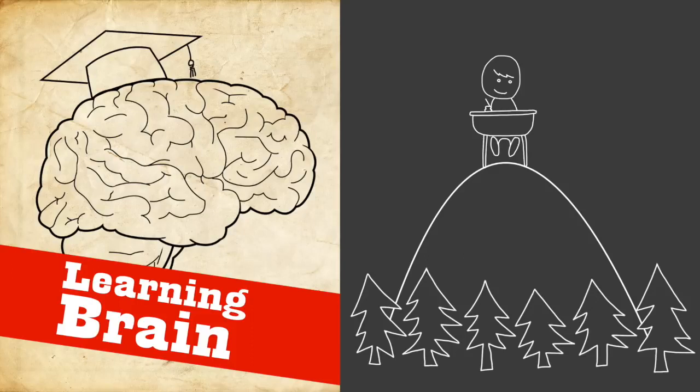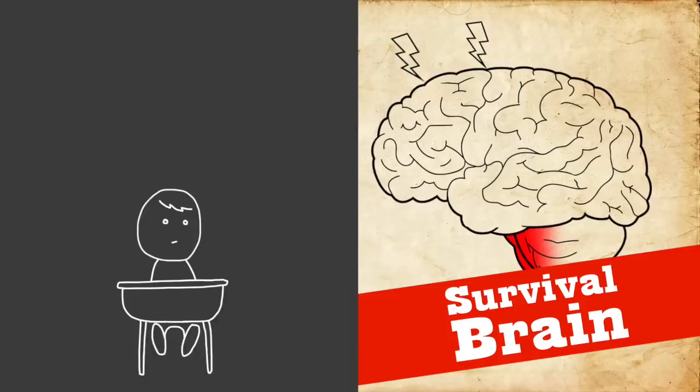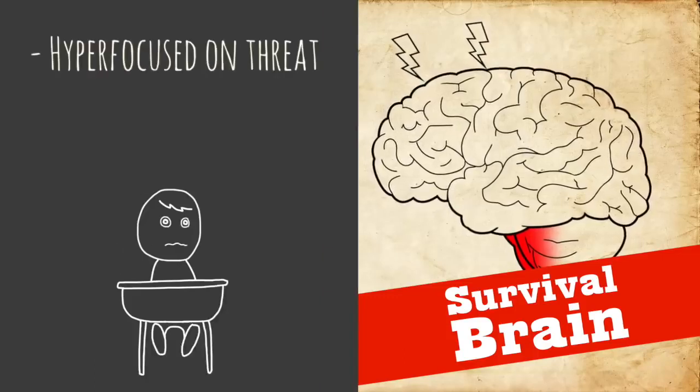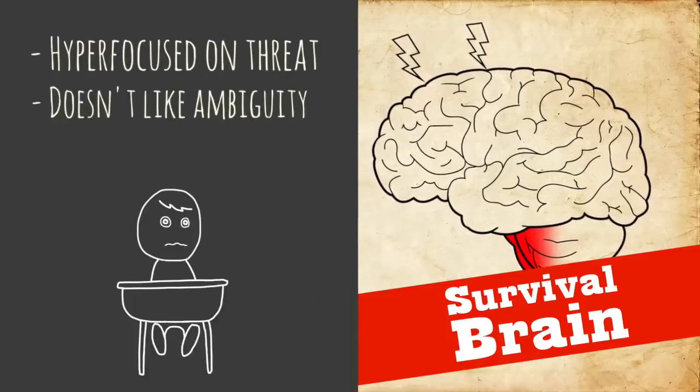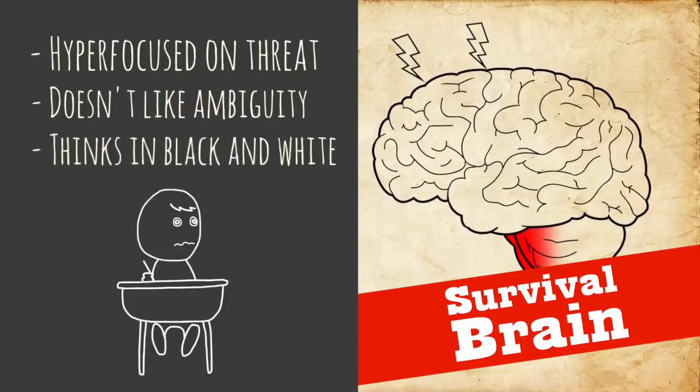Now survival brain on the other hand is completely different. It's hyper-focused on threat. It doesn't like ambiguity. It wants clear hard facts. It thinks in black and white terms. It doesn't want anything to be gray at all.